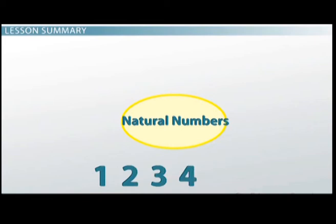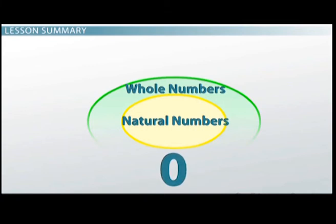To review, the most specific group of numbers are the natural numbers, and they are 1, 2, 3, so on and so forth. The next step out is the whole numbers, and we simply add zero to the group. Everything else stays the same.